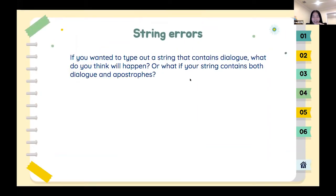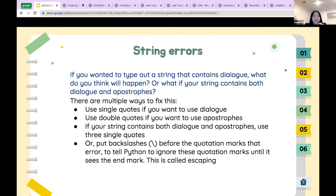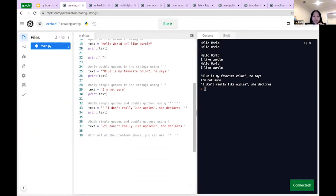We also went over this quickly last class: for strings that contain double quotes or single quotes within the string, to fix that — if there are only single quotes inside the string, use double quotes outside. If there are only double quotes, use single quotes outside. But if they contain both, either use three single quotes or put backslashes before each of the quotation marks — that's called escaping.